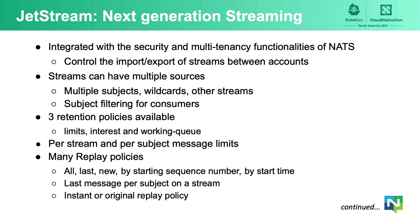JetStream gives you many options for replay policies. You can replay all messages in a stream, the last message in a stream, the last message for each subject in a stream, just new messages, or start at a sequence number or a point in time. You can also decide the speed of replay — either instant replay, where data is sent as quickly as you can consume it, or the original replay policy, where data is replayed at the same speed at which it was originally published.